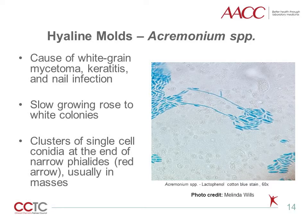Acremonium species can cause white-grain mycetoma, keratitis, and nail infection. Microscopically, it can be confused with Fusarium due to the pink to white woolly colonies, but it grows at a slower rate. Microscopically, it has narrow hyphae and the conidia form clusters at the end of narrow, delicate phialides, as pointed out by the red arrow.